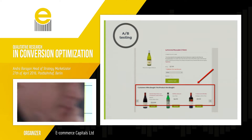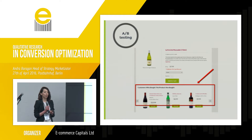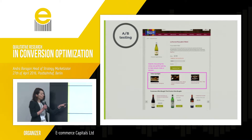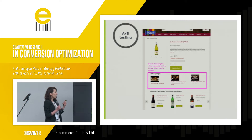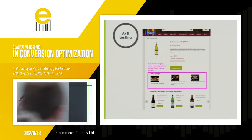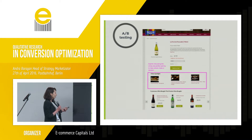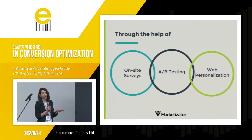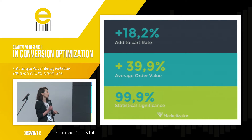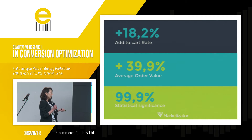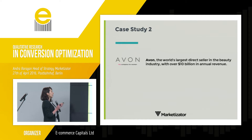The anxiety about whether they would choose the right wine we addressed by doing an A/B test on the product page. We introduced a recommendation section where experts would talk about the wines and what food they would pair well with. This helped visitors understand if they would like the wine — for example, if it's good for their fancy dinner with friends. Together with on-site surveys, A/B testing, and web personalization, we managed to increase the add-to-cart rate by 18.2% and increase the average order value by 40%, with a statistical significance of 99.9%.